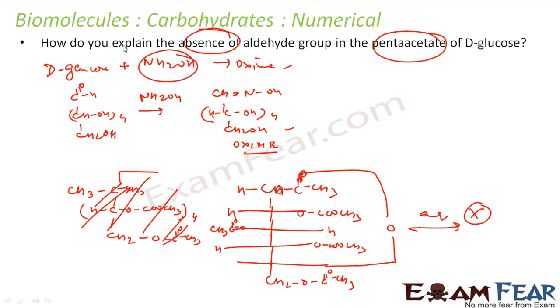If you want to see whether it has aldehyde group or not, you react a compound with hydroxylamine. In this case, if you take pentaacetate of D-glucose and react with NH2OH, there will not be any reaction. The oxime won't be formed, and this proves there is no free aldehyde group in pentaacetate of D-glucose, even in aqueous medium.